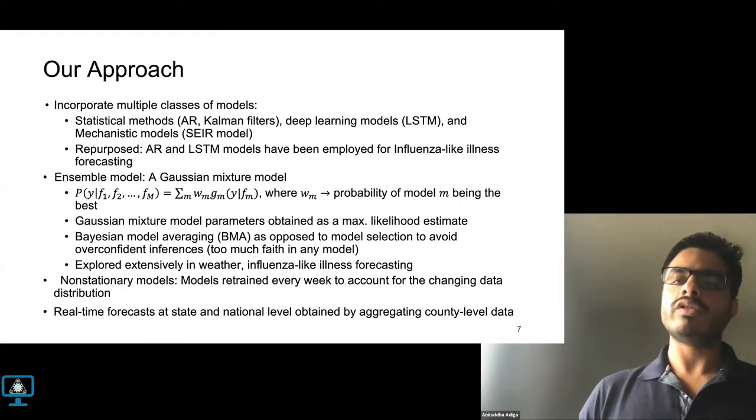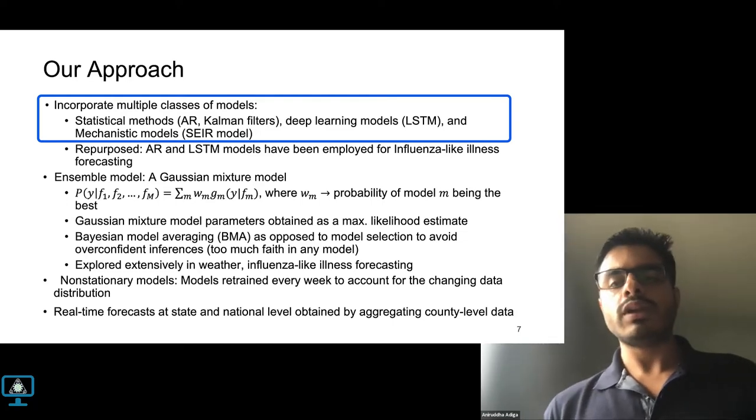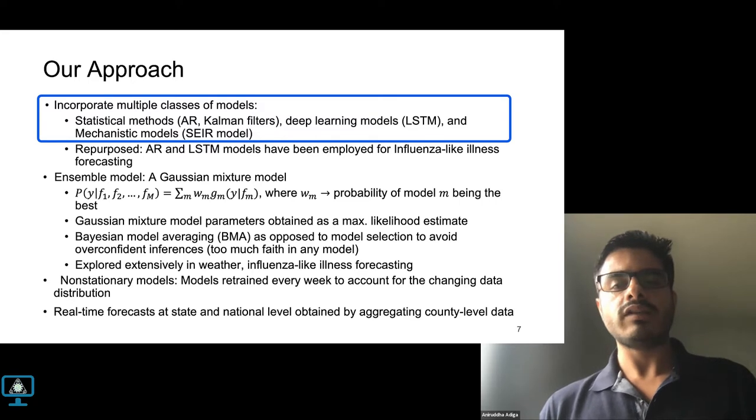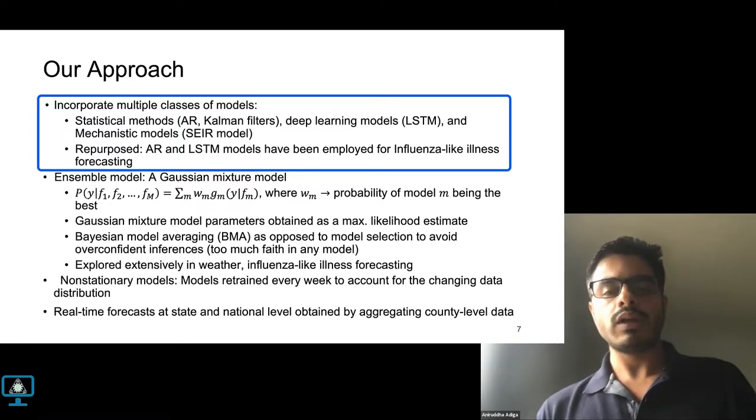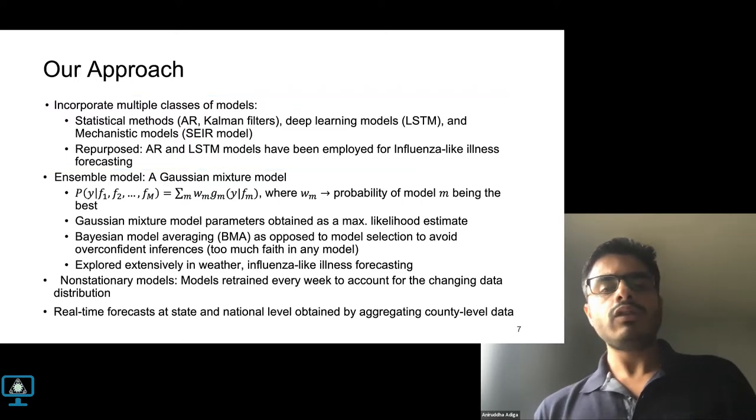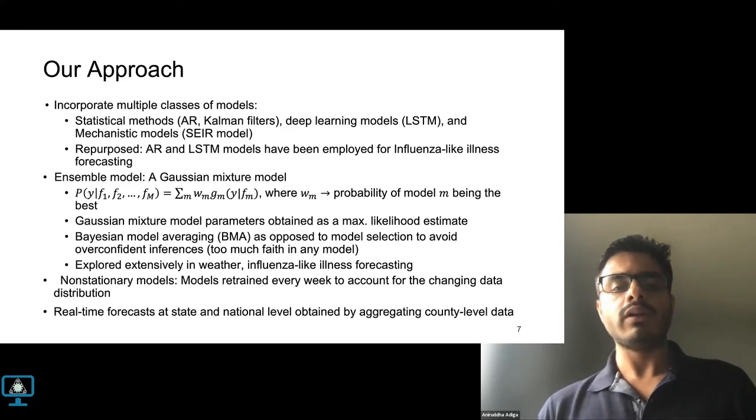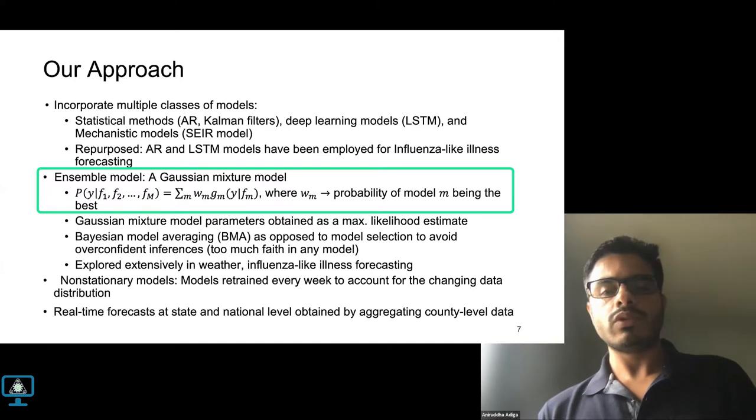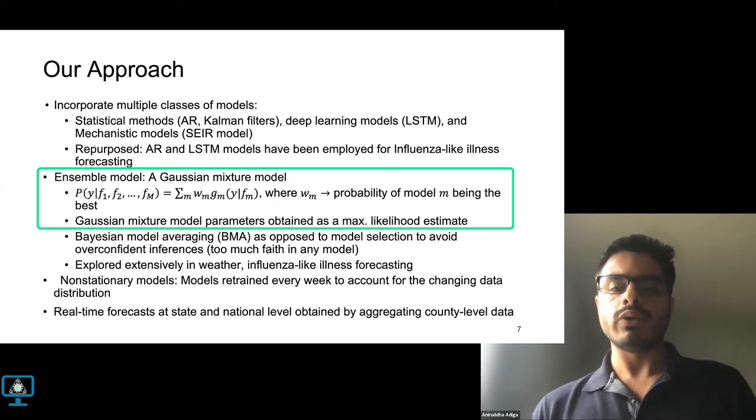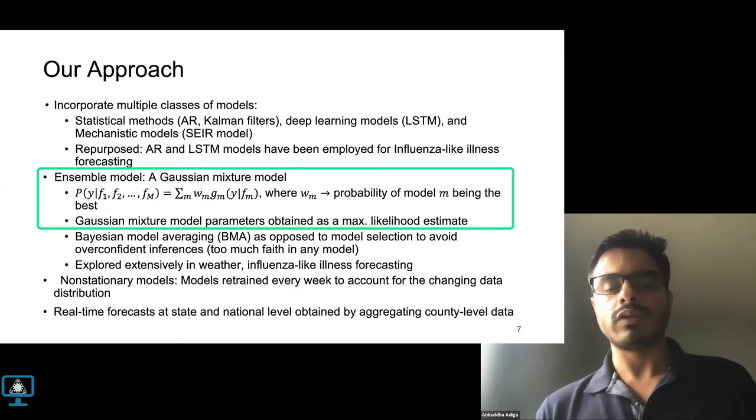So what is our approach towards high-resolution or county-level forecasting? We employ multiple classes of methods, specifically autoregressive models, Kalman filters, LSTM, and SEIR or causal models. Some of the models were previously deployed for flu forecasting and have provided quality forecasts. We have repurposed them for forecasting COVID-19 cases. Each of these methods provide probabilistic forecasts and then get combined through Bayesian model averaging for the BMA ensemble. Specifically, the BMA model models the likelihood of a forecast taking value Y, given independent forecasts from N different methods as a mixture of Gaussian. The weights in the mixture indicate the probability of the associated model producing the best forecast. The GMM's parameters are obtained as a solution to maximum likelihood estimation problem. This problem is intractable and hence we use the expectation maximization method. It's an iterative process to find the GMM parameters.